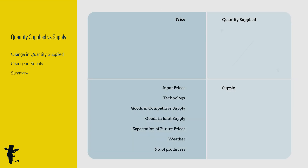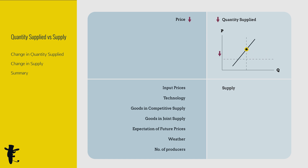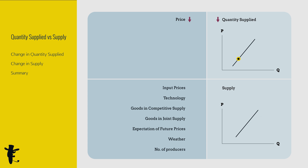Let's add graphs into the summary. When price increases, quantity supplied increases — it's a movement up the supply curve. When price decreases, quantity supplied decreases — it's a movement down the supply curve. When any of these non-price factors change in their respective directions, supply increases and the supply curve shifts right. When these factors change the other way, supply decreases and the supply curve shifts left.